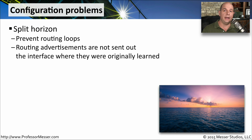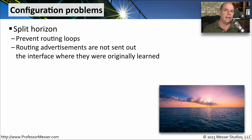If the wide area network connection is working the way it should, you could still have problems with the configuration of the protocols that are going over that wide area network. A good example of this is Split Horizon. This is a configuration you would set in the dynamic routing protocols that you're using across this wide area network link, and it is ideally designed to prevent any type of routing loop on the network.